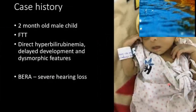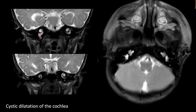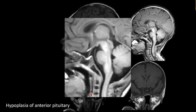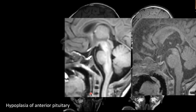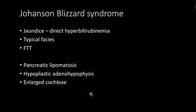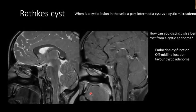Another pediatric case: a two-month-old child with failure to thrive and hyperbilirubinemia — visibly jaundiced — with severe hearing loss. Imaging shows grossly enlarged cochleae with cystic dilatation and a hypoplastic pituitary gland with a very small adenohypophysis. This patient also had a hook-like nose, pancreatic lipomatosis, and hypoplastic adenohypophysis. This is Johanson-Blizzard syndrome — a rare but memorable syndrome for a radiology case-based presentation.